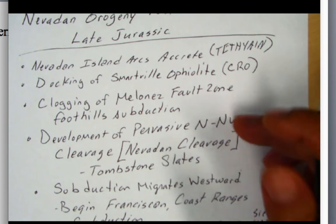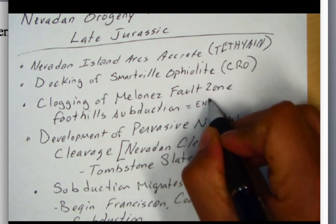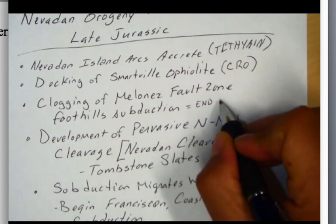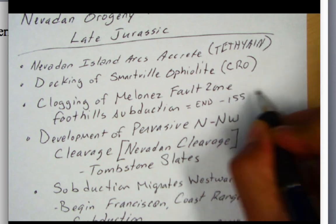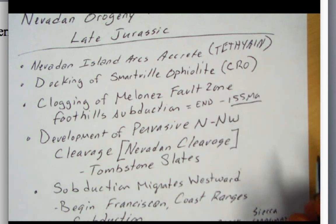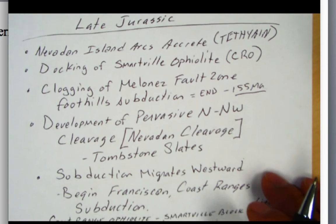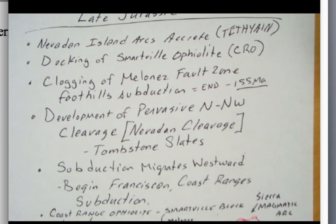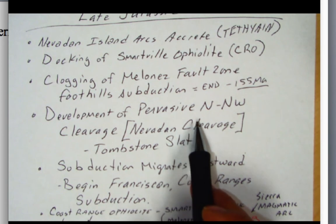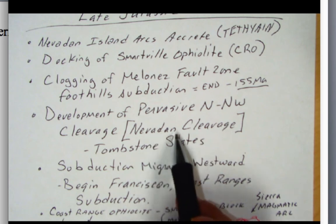So it's going to end — right around 155 million years ago, which is the late Jurassic, when this is happening. And so that collision is also going to develop a pervasive foliation or cleavage in the rock, all trending north-northwest. We call it Nevadan cleavage.